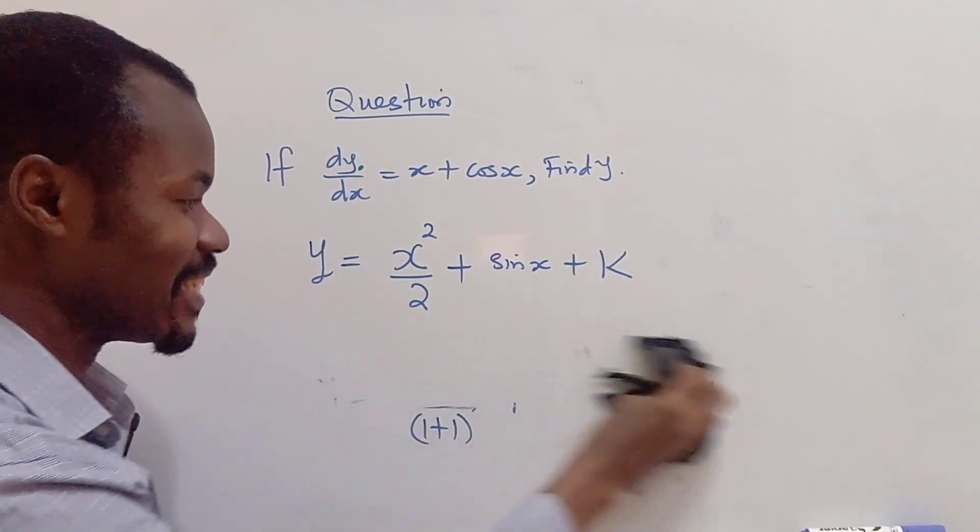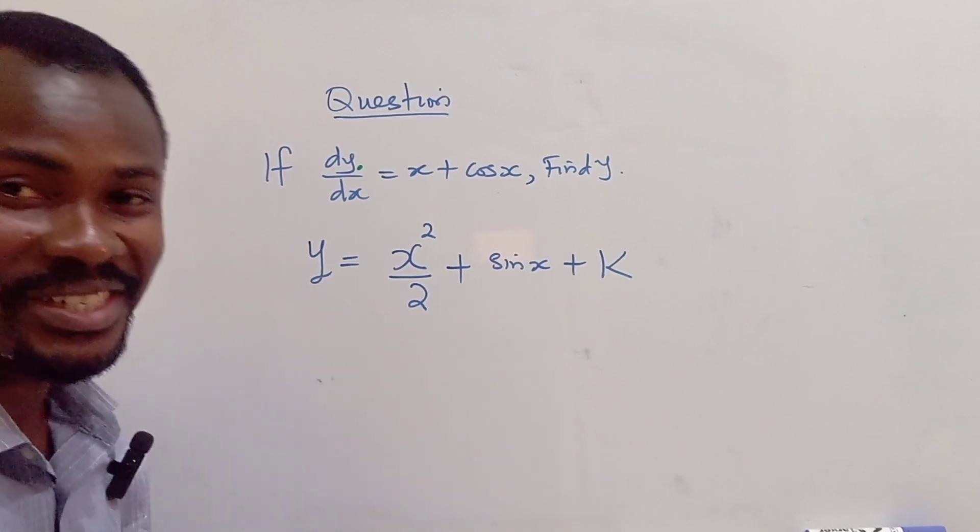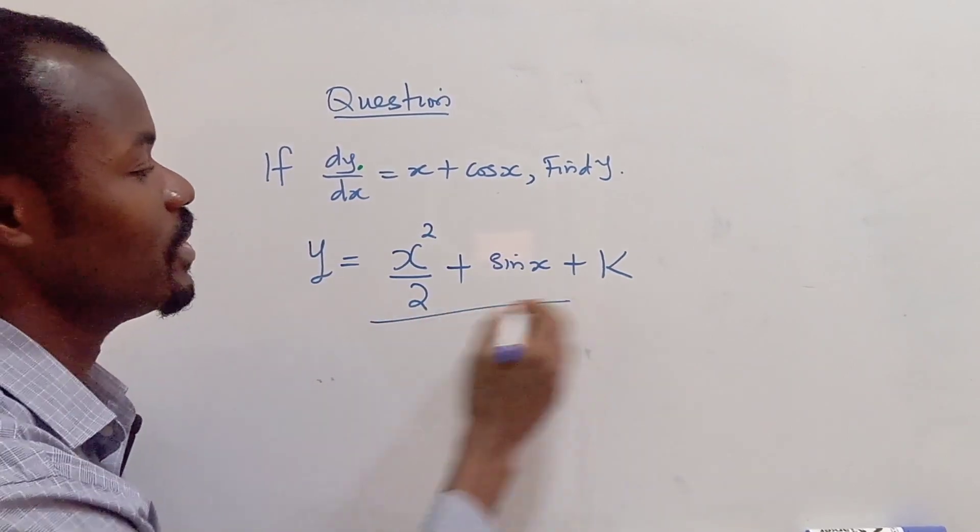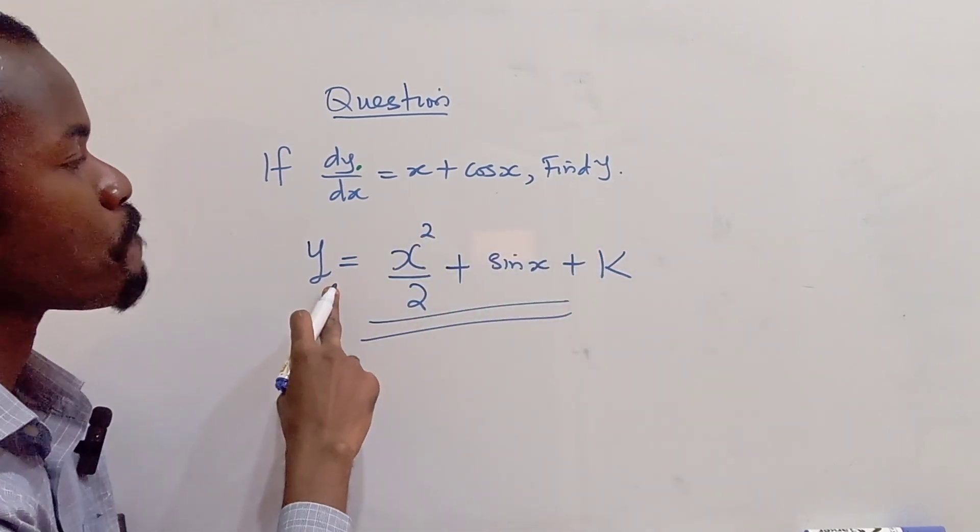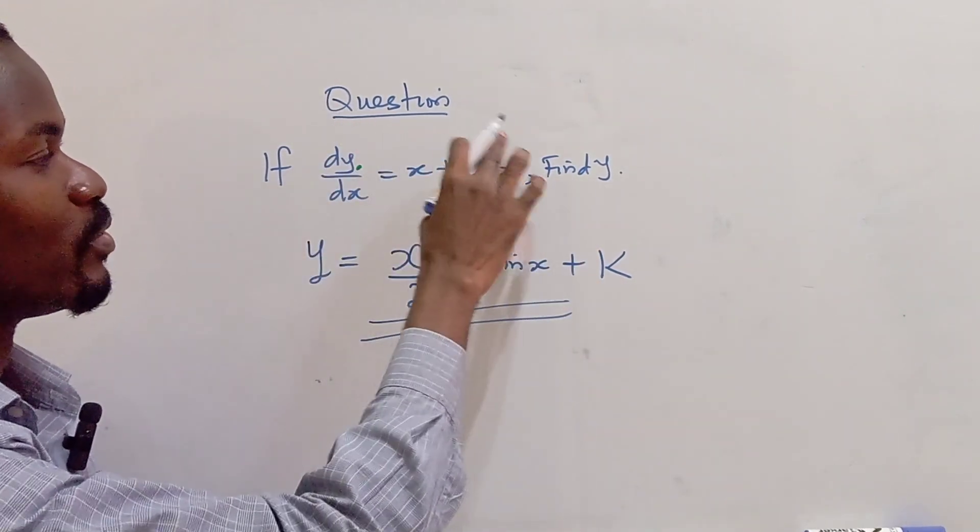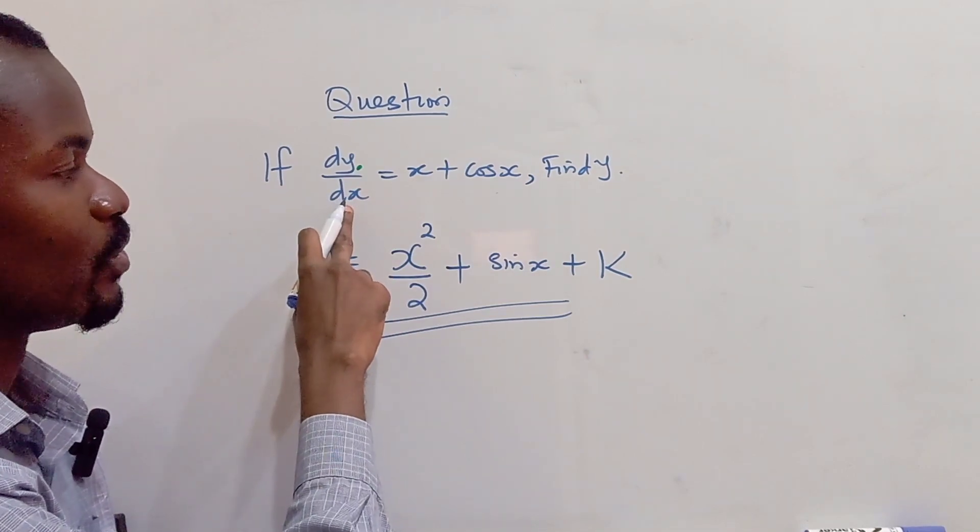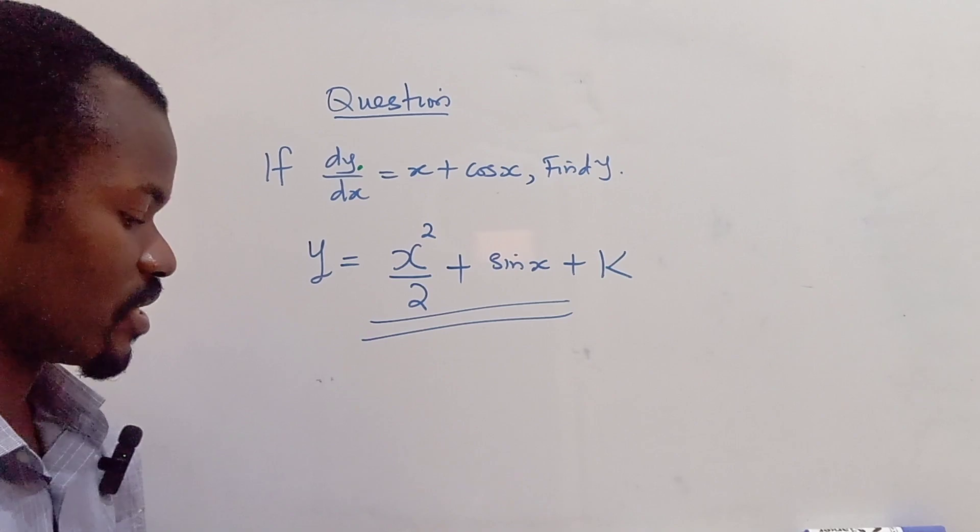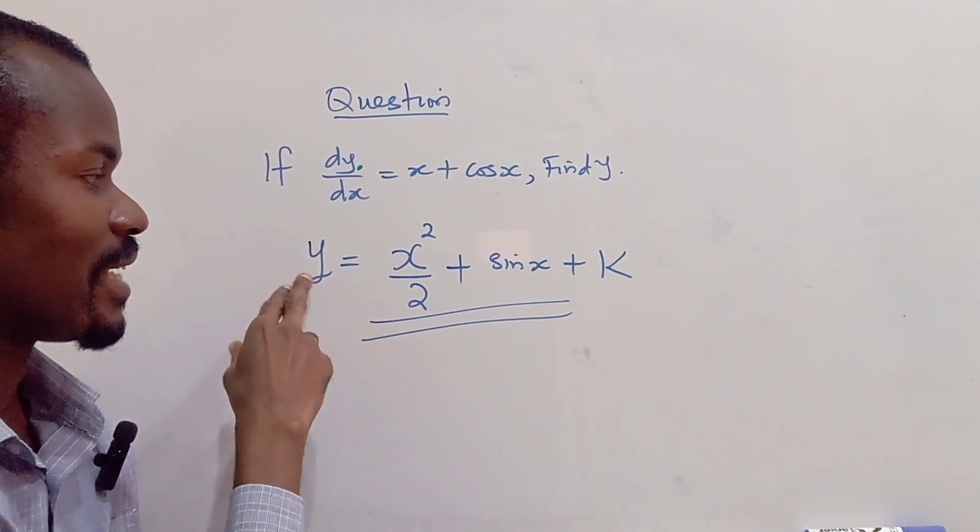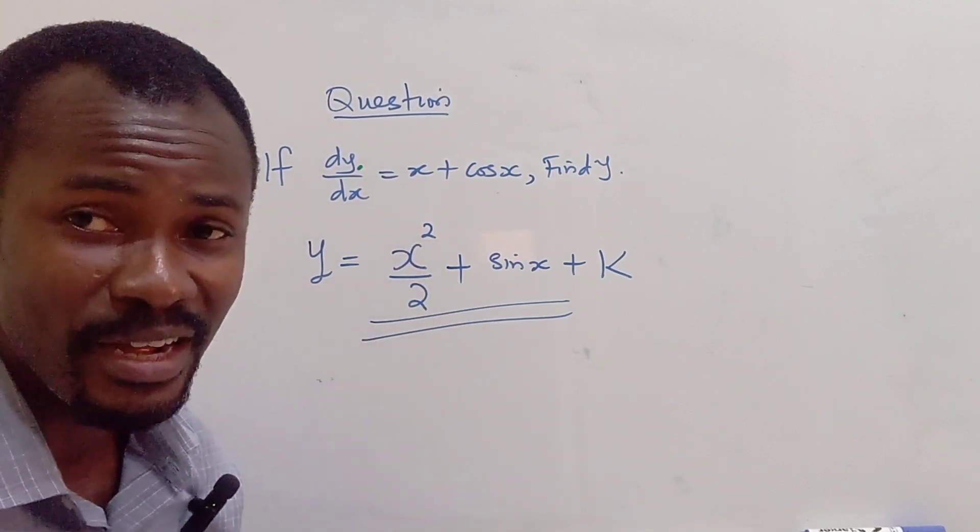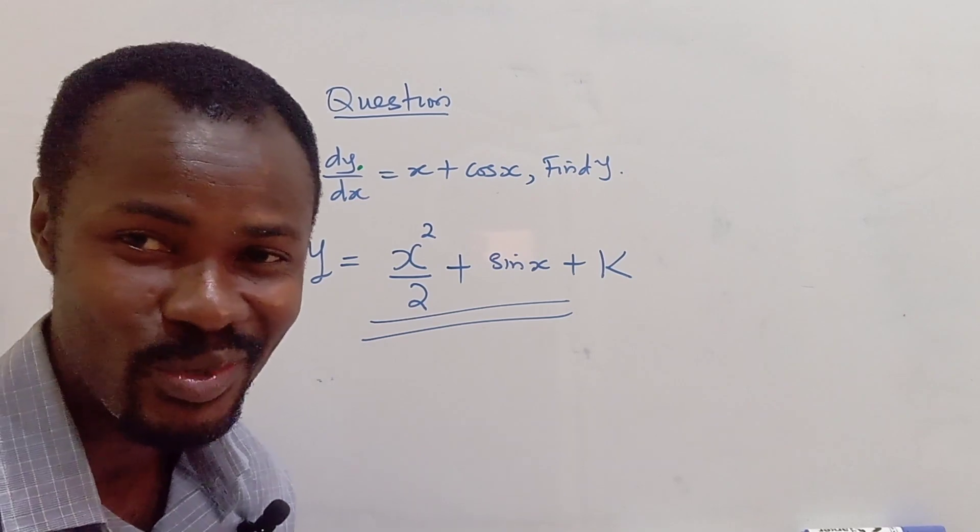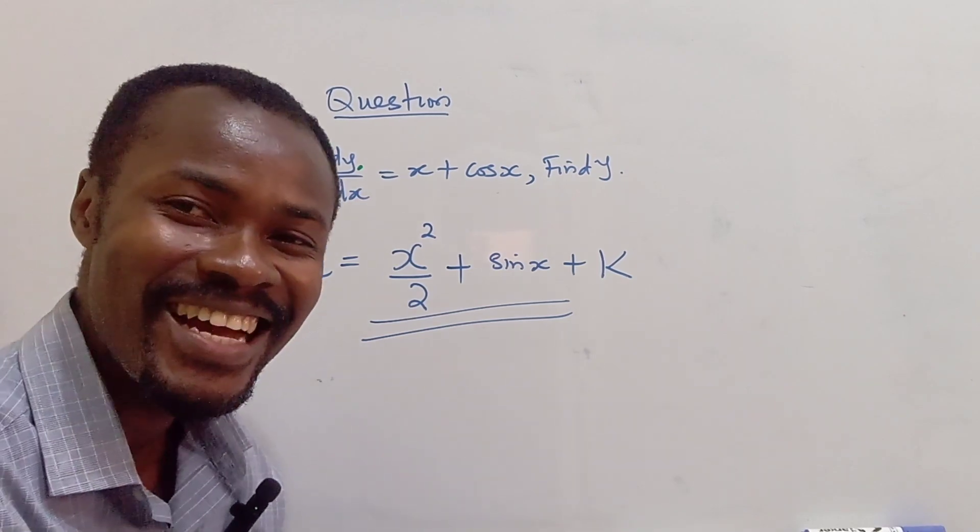So that gives us the simple solution to this problem. So the value of y, when we integrate both sides, first cross multiplying the dx, so we have y equals x squared over 2 plus sine x plus k.